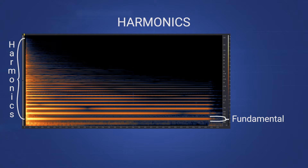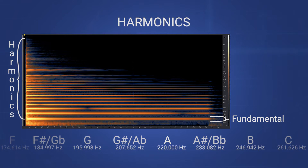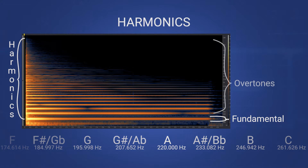In this case, the frequency on our spectrogram reads 220 Hz, or 220 cycles per second. A frequency of 220 Hz matches A3 on our musical scale — that's the A below middle C. The horizontal lines above the fundamental tone are the sound's overtones, and along with the fundamental, make up the sound's harmonic series.